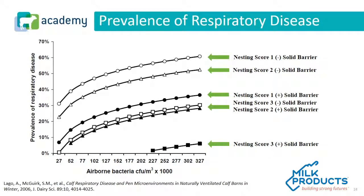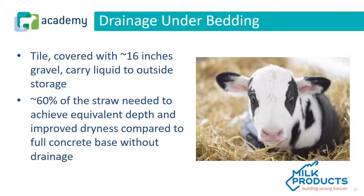We already mentioned putting drainage under the bedding. An example would be a gravel base with a cloth-covered drain tile beneath it to prevent plugging, carrying liquid to outside storage. This gives calves the benefit of moving liquid away, resulting in lower ammonia levels, lower bacteria levels, and much easier management of deep bedding. With proper drainage, you don't need nearly as much straw to maintain deep bedding in calf barns.